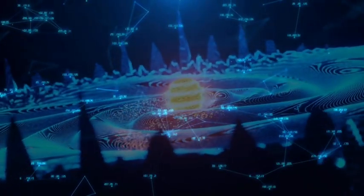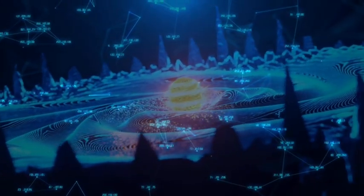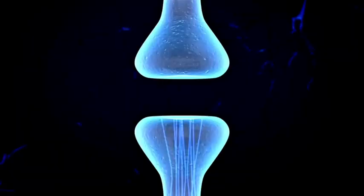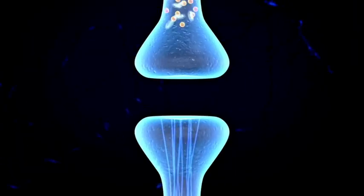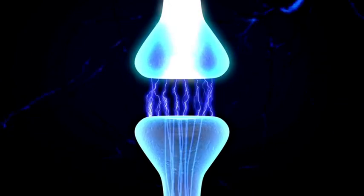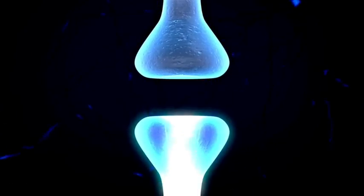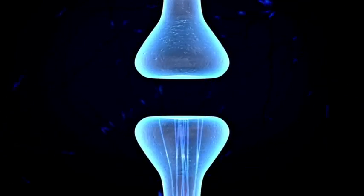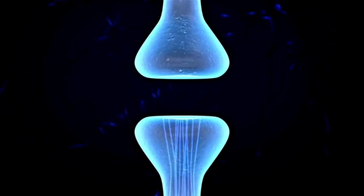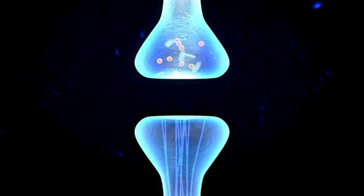Between these clusters, galaxies lie along thin luminous strings of gas called galactic strings that can be hundreds of millions of light-years long. Clusters and strings of galaxies are surrounded by space that contains very little matter.